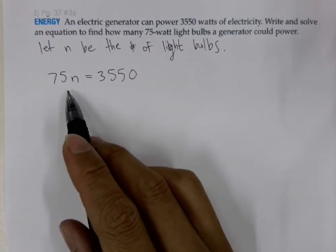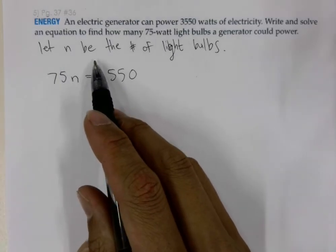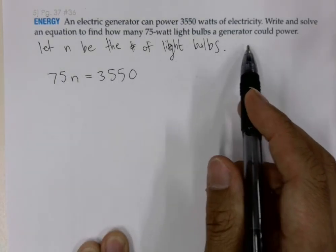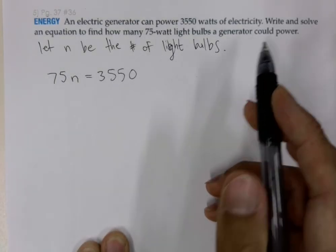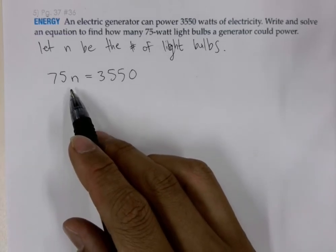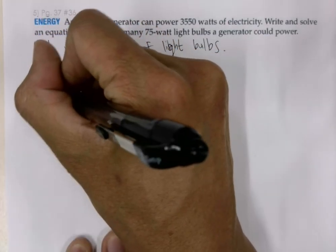Now if we solve for N, we'll be able to find the number of light bulbs the generator could power. Let's isolate the variable by dividing both sides by 75.